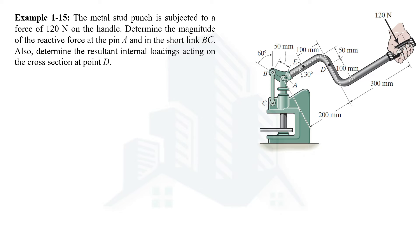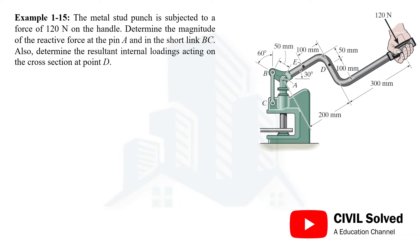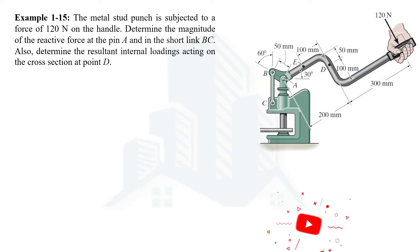In this example, a metal stud punch is subjected to a force of 120 N applied by hand, as you can see in this image. We are asked to calculate the magnitude of the reactive force at pin A and in the short link BC. We are also asked to calculate the resultant internal loadings acting on the cross section at point D.